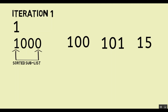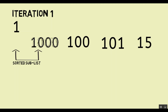Now at this point 1 is compared with 1000. Basically what we are trying to do is find the correct position of 1 in the sorted sublist. So when 1 is compared with 1000 — the only element in the sorted sublist — it is less than 1000. So 1 moves in front of 1000 and 1000 shifts. This is an important point: 1000 shifts one place and 1 comes in its place.